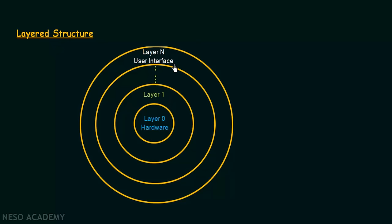In this layered structure, your operating system is divided into a number of layers. At the lowermost level, layer 0, you have your hardware, then layer 1, layer 2, up to layer N, and the topmost layer is the user interface. In contrast to the monolithic system where everything was packed into a single level, here we have broken down the functionalities into different layers. The main advantage of this is that it is easy to implement and debug, because every layer has different functionalities. If one layer is having a problem, like the CPU scheduling layer, we just have to look at that layer and debug it instead of digging into the entire operating system.